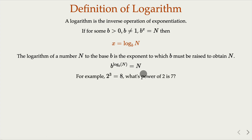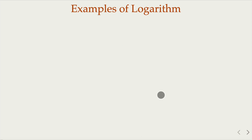For example, 2 to the third power equals 8, but what power of 2 would give 7? The answer would be log base 2 of 7. This quantity is slightly smaller than 3. Some examples of logarithm: by definition, log base 2 of 8 — you know that 2 raised to the third power is 8, so that's equal to 3.